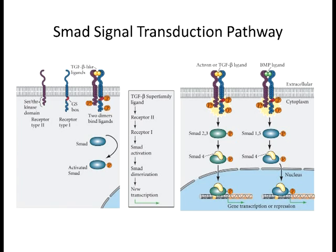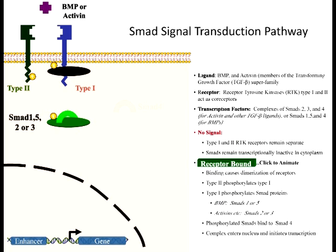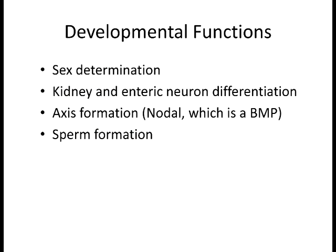The receptor-ligand combination matters because it turns on different genes depending on which ligand causes phosphorylation events with which proteins in the pathway. BMPs are not just for bone development—they're for axis formation, neural development, sex determination, sperm formation. They were originally called BMPs because they were discovered in bone morphogenesis, but the name stuck even though they're applied to many other developmental applications. BMP is the ligand.